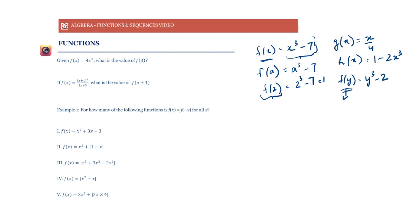Say f(x) is equal to 4x cubed. What is the value of f(3)? The meaning of f(3) is that wherever you have x, put it equal to 3. Simple as that. So when f(x) is 4x cubed, f(3) will be 4 into 3 cubed.